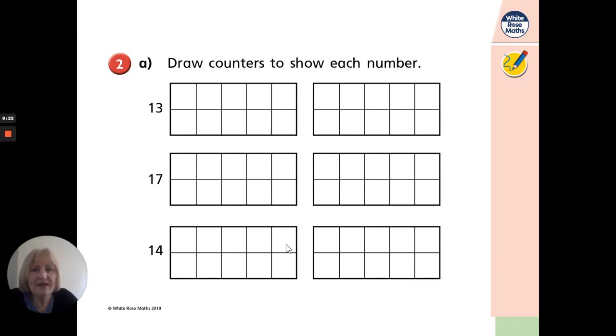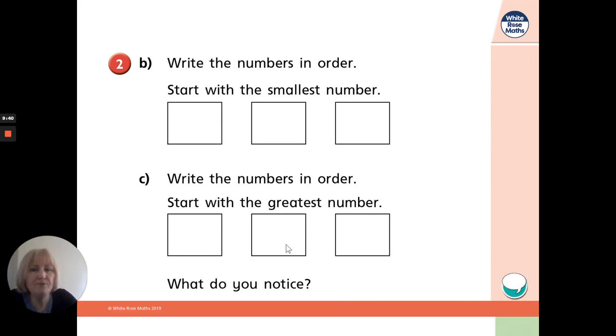This is your job today. I would like you to draw tens frames and counters to show each of these numbers. Number 13, number 17, and number 14. That's your first job. When you've done that, I'd like you to write the numbers in order. First of all, start with the smallest number and get a little bit bigger and the greatest number on this side, and then swap them round. Start with the greatest number and then a little bit smaller and finish with the smallest amount. So remember, it's the tens frame first of all, 13, 17, and 14. Remember those numbers, 13, 17, and 14. And when you've done those tens frames, see if you can put them in order. Okay, that's all for today, whole class. Well done. I'll see you tomorrow. Bye.